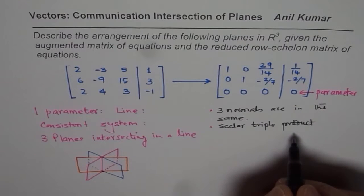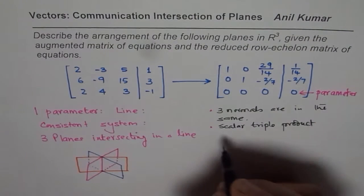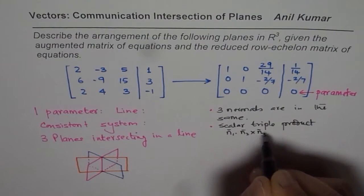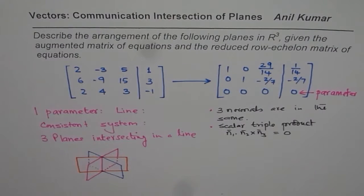If you find scalar triple product of these normals, that is N1 dot N2 cross N3, that should be equal to 0. That is one thing which you can verify. That is very important.